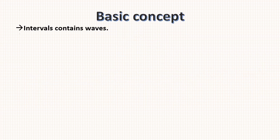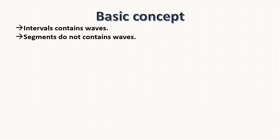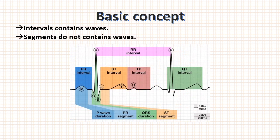The basic concept of intervals and segments: interval contains waves and segment does not contain any waves. For example, just see PR interval, it contains P wave. Similarly, QT interval contains QRS complex and T wave. Now let's see details about each segment and intervals.